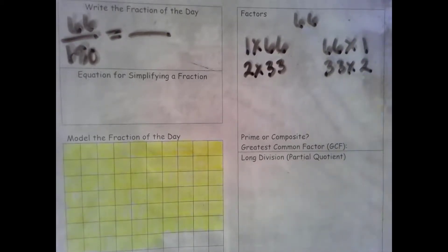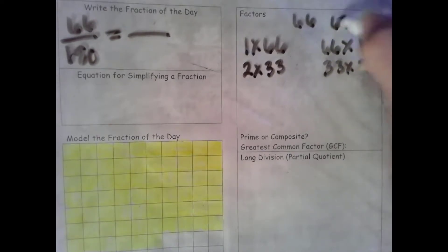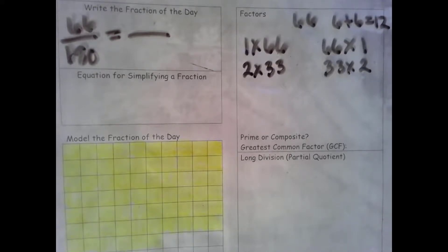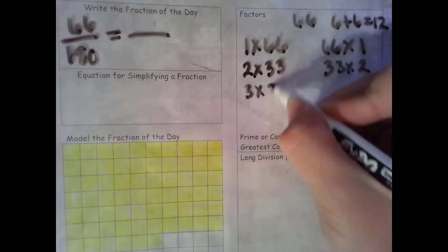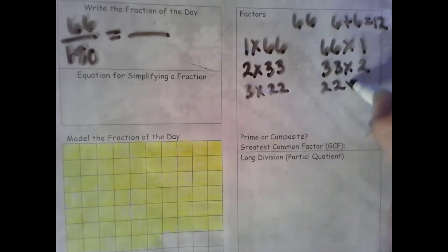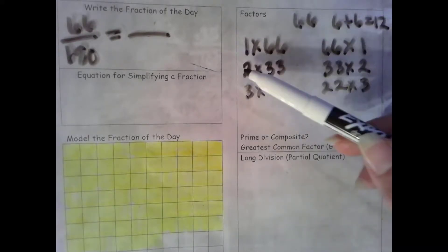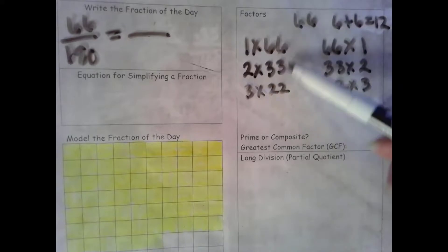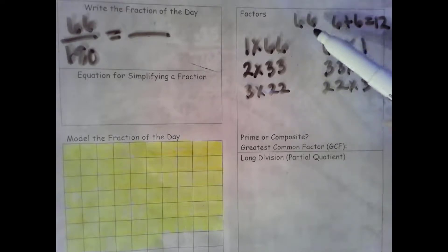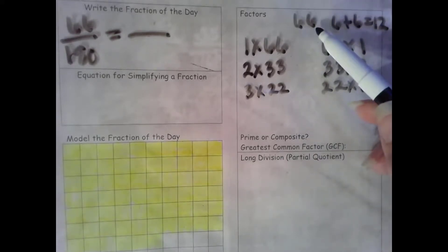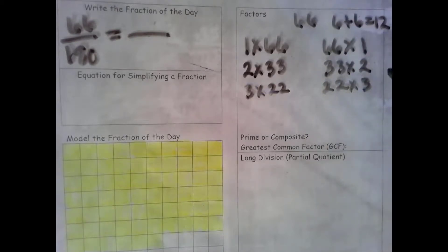Now we try 3. The rule for 3 is that we add the digits together. 6 plus 6 is 12. 12 is a multiple of 3 so 3 is a factor. 3 times 22. 22 times 3. We try 4. We look at the second factor with 2. Is 33 even? No. So 4 won't be a factor. 60 and 64 and 68 are all multiples of 4 but not 66. We try 5. The rule for 5 is that it ends in a 0 or 5. It ends in a 6. So 5 is not a factor.